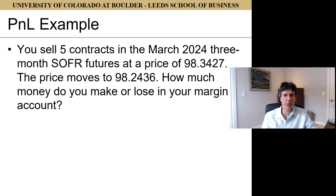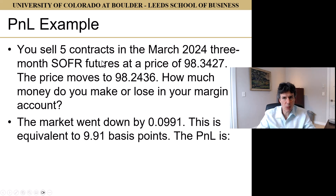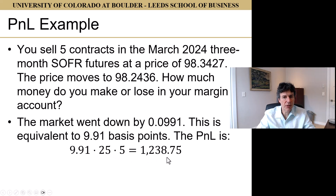Let's sell five contracts in the March 2024 three-month SOFR futures at a price of 98.3427. The price moves to 98.2436. The market went down by 0.0991 in actual price terms, equivalent to 9.91 basis points. The price went down and we're short, so we make money: 9.91 times $25 times 5 contracts equals $1,238.75. Alternatively, take 98.3427 minus 98.2436, multiply by 2,500 and by 5, and you get exactly the same answer. Note: the price went down, so rates went up.